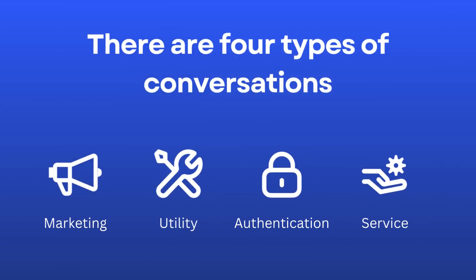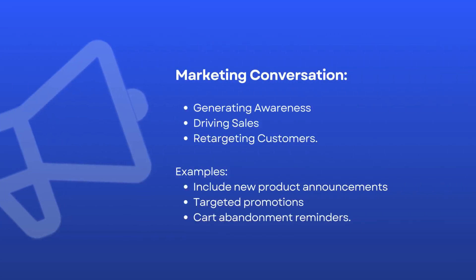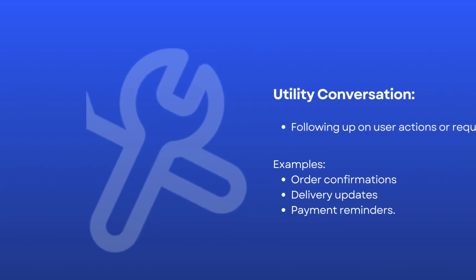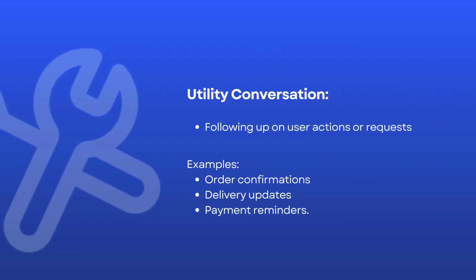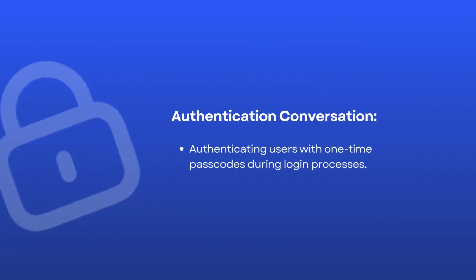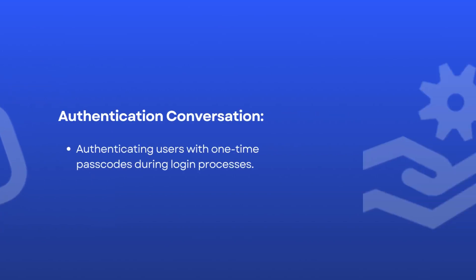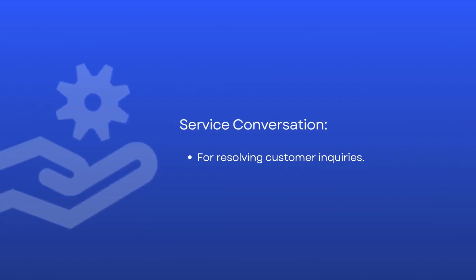There are four types of conversations: marketing, utility, authentication, and service. Marketing conversations are for spreading a word about your brand, like announcing new products or running promotions. Utility helps keep customers informed about things like order updates or payment reminders. Authentication is used to verify users with one-time passcodes during logins. Service helps resolve customer inquiries and support issues.